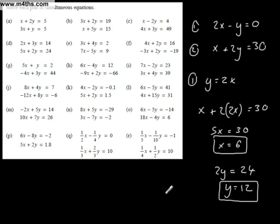I could have used elimination there. If I wanted to do elimination, let's use elimination on it. We've got 2x minus y equals 0, and we've got x plus 2y equals 30.